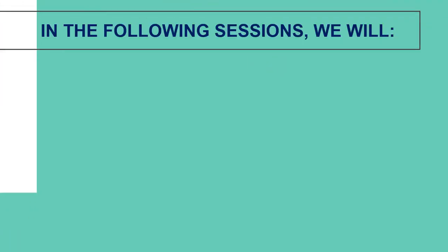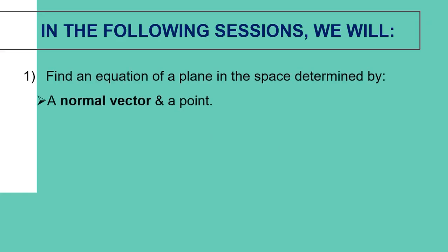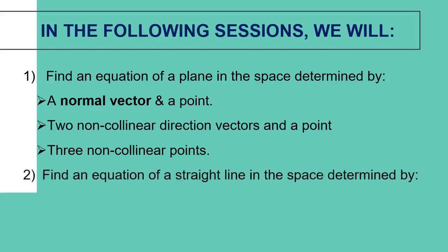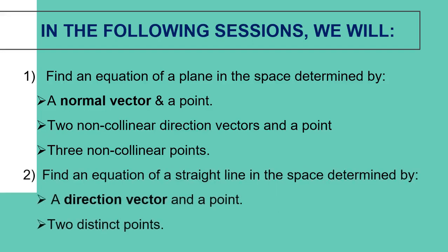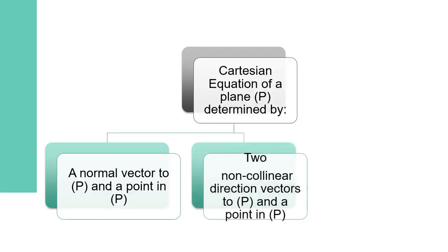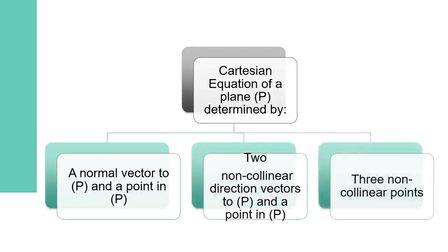In the following sessions, we will: find an equation of a plane in space determined by a normal vector and a point; find an equation of a plane in space determined by two non-collinear direction vectors and a point, or by three non-collinear points; and find an equation of a straight line in space determined by a direction vector and a point, or two distinct points.